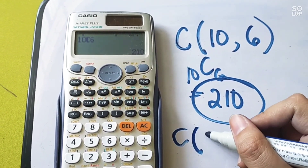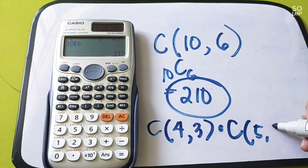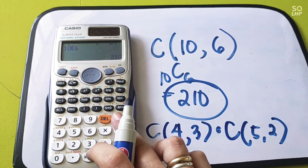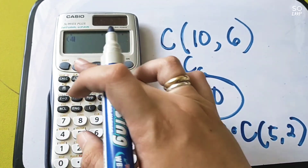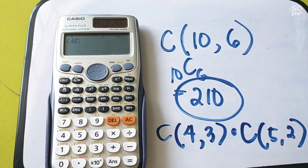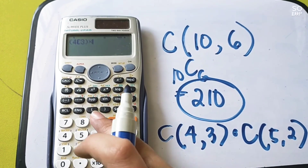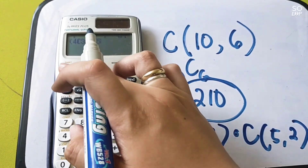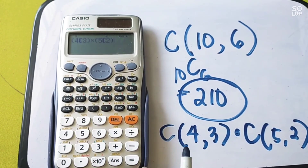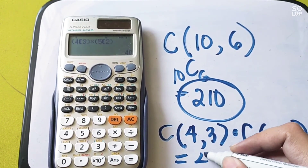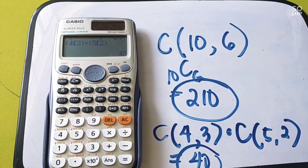What if there's multiplication? For example, C(4,3) multiplied by C(5,2). You need to use open and close parentheses. Press open parenthesis, then 4, Shift, NCR, 3, close parenthesis, then multiply. Open parenthesis again, press 5, Shift, NCR, 2, close parenthesis, then equals. The answer is 40. That's how simple it is to use the calculator — but remember, this is for checking purposes only since teachers require a written solution.